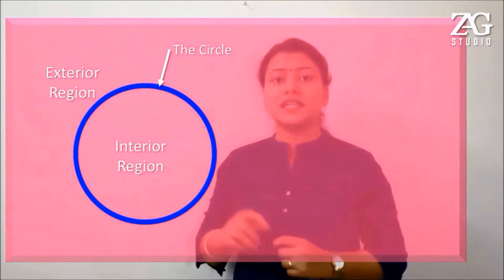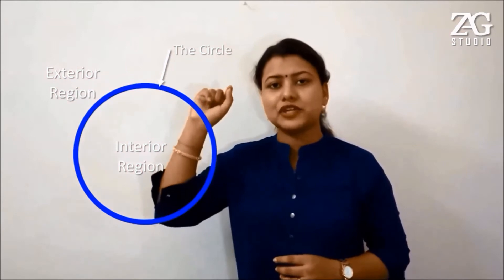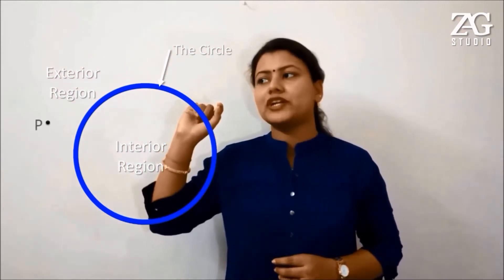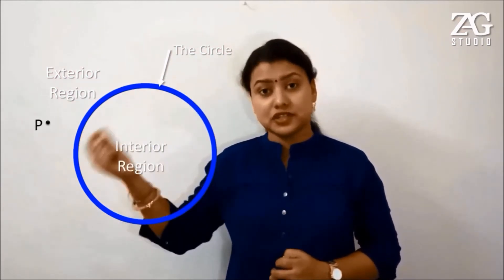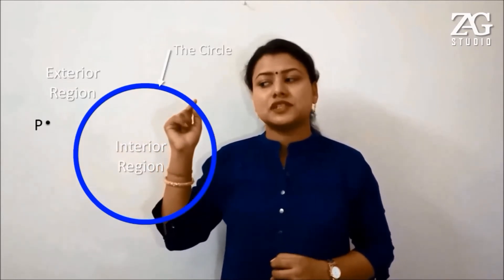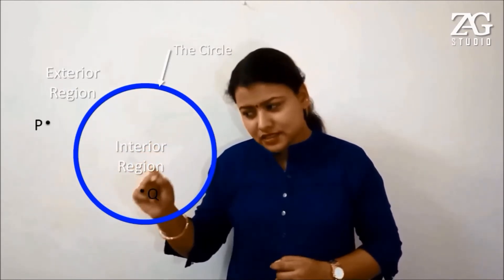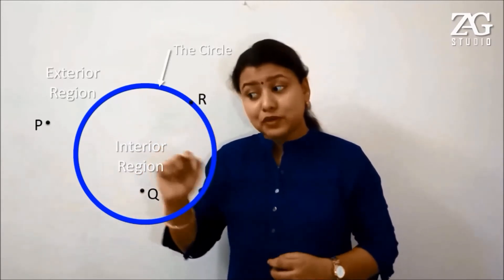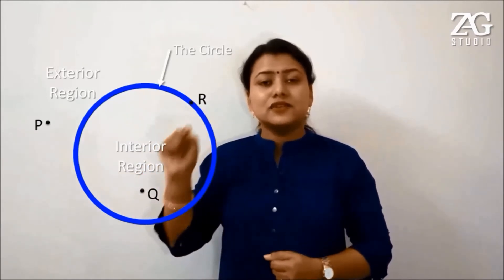That means if I plot a point on a plane with a circle, the point will either lie in the interior region, on the circle itself, or in the exterior region.